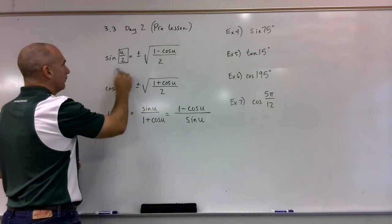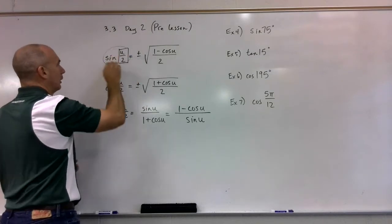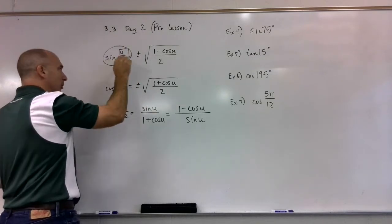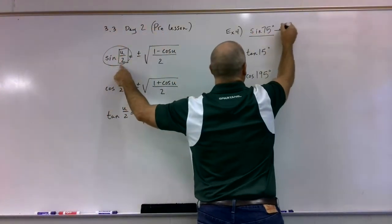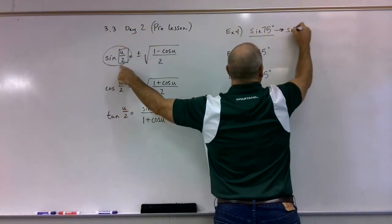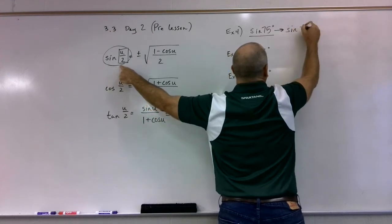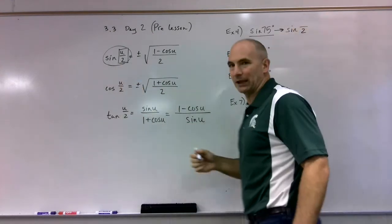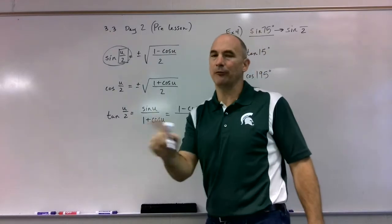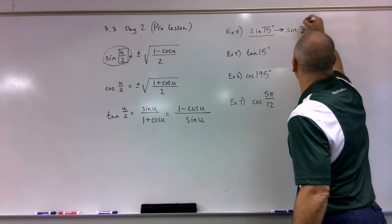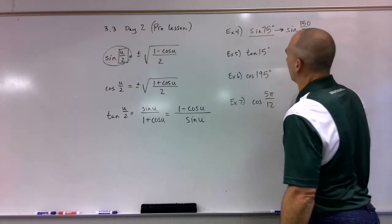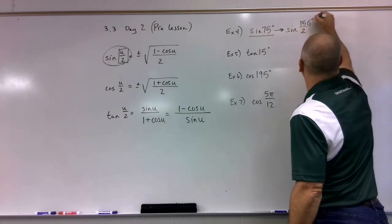So your brain has to go, 'Okay, I want to manipulate this to where I have sine of something over 2.' The ironic thing is it's called the half angle formula, but you end up doubling that number so that you can make it work. Now you've just said, I want to let u equal 150 degrees, and then you're going to put it into this formula.